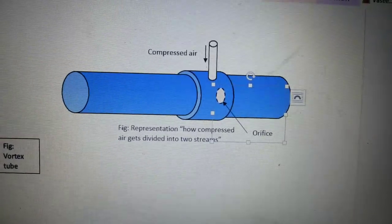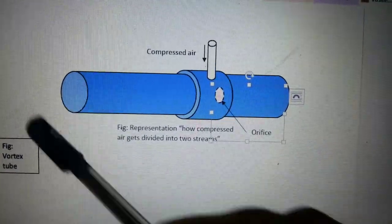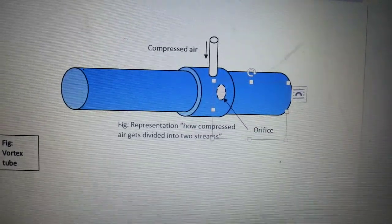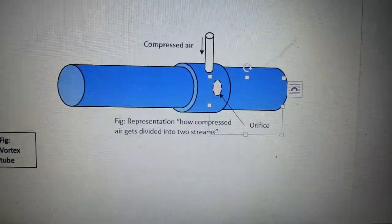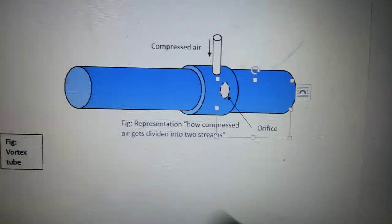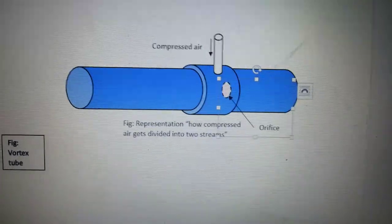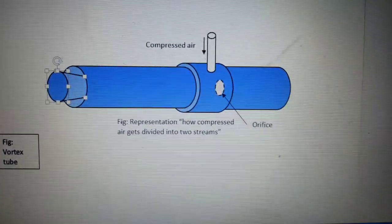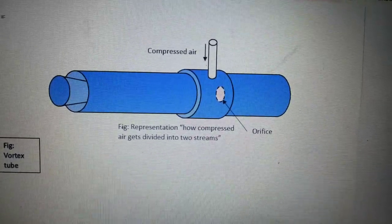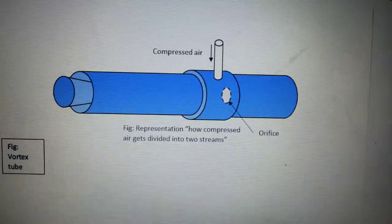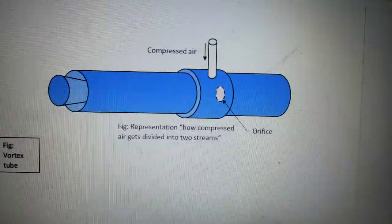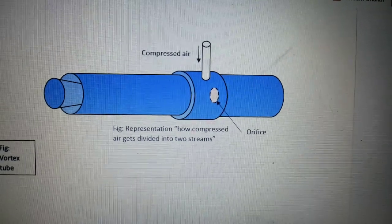The spinning stream of air passes down the hot tube in the form of a spinning shell, due to centripetal acceleration, and reaches the throttle wall. The throttle wall restricts the flow of air.